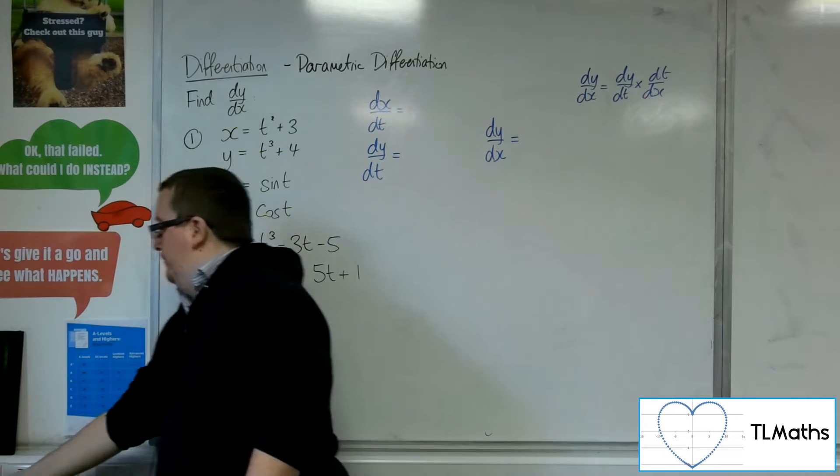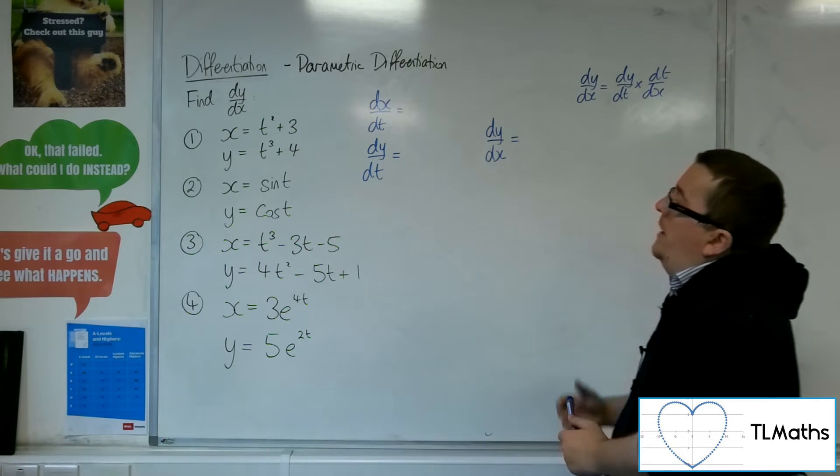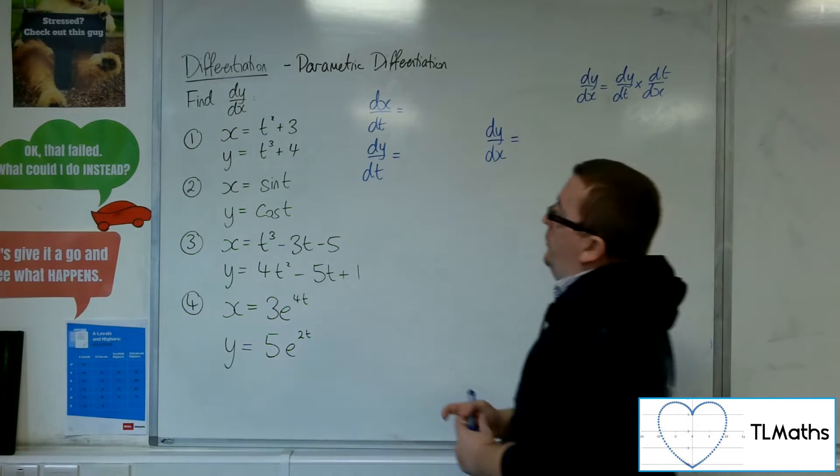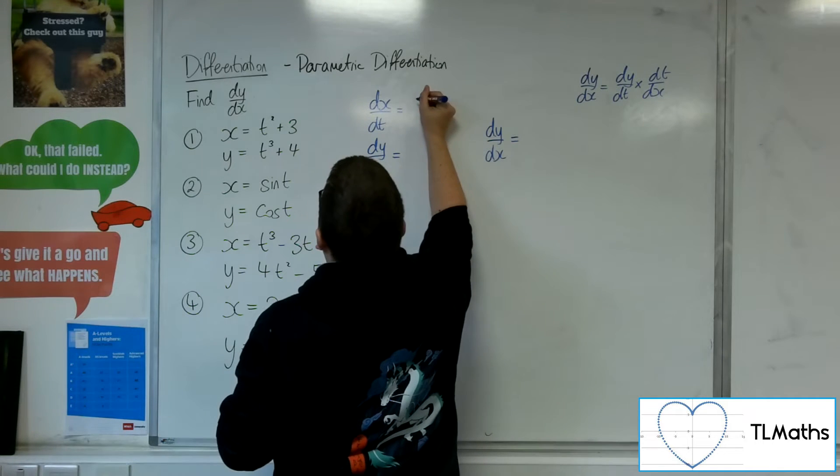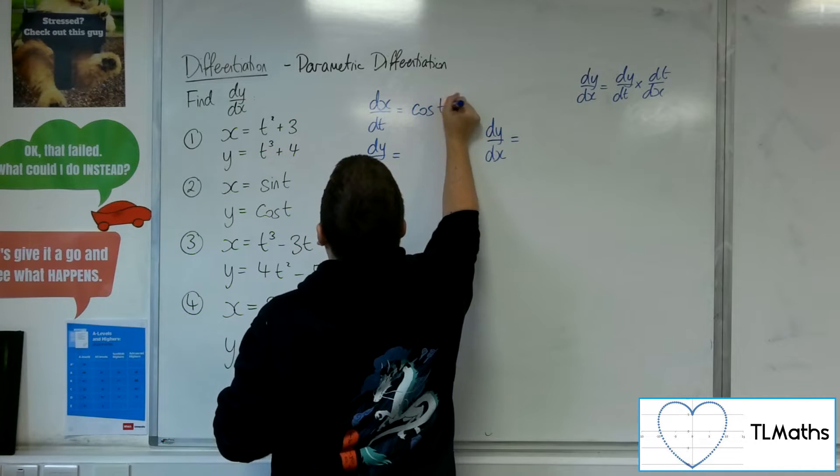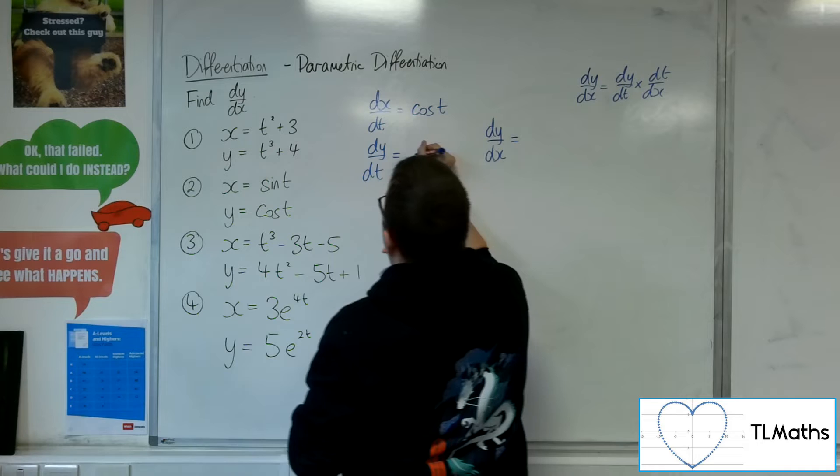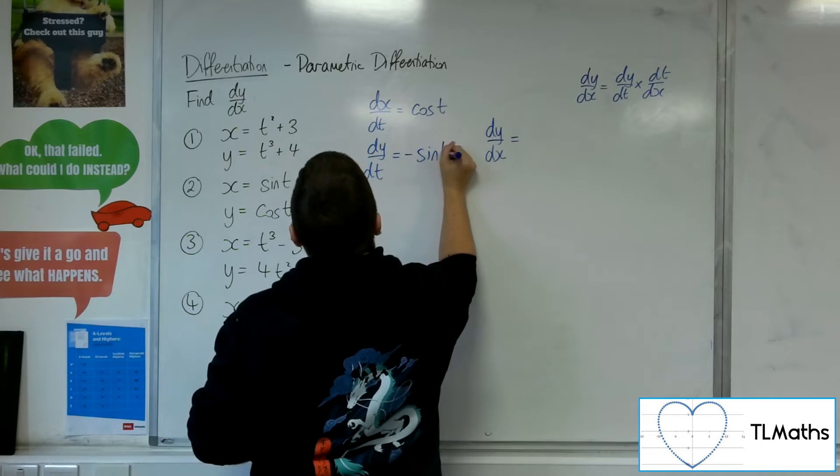So let's have a look at number 2. So x equals sine t, y equals cos t. So dx by dt is cosine of t. And dy by dt is minus sine of t.